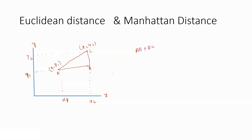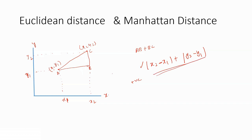We cannot straight away calculate the distance between A and C; we calculate AB plus BC. The Manhattan distance formula is: |x2 minus x1| plus |y2 minus y1|. The absolute value means that even if the result is negative, we consider it as positive. The absolute term always indicates a positive value. This is the simple formula used for Manhattan distance.